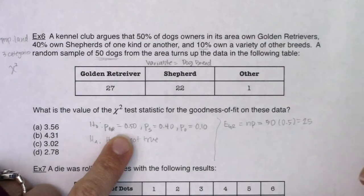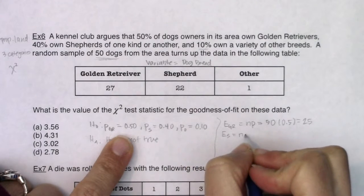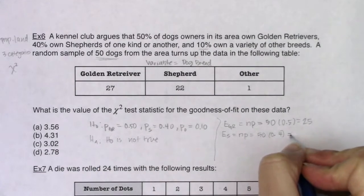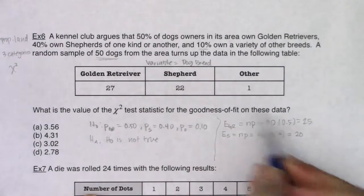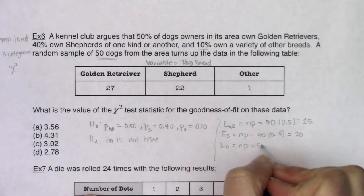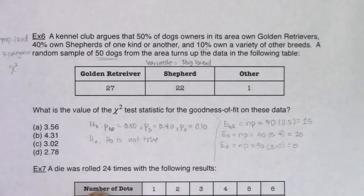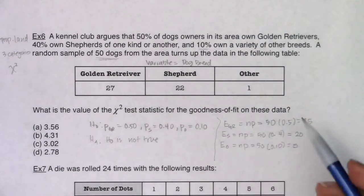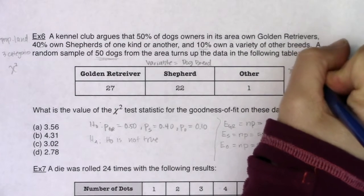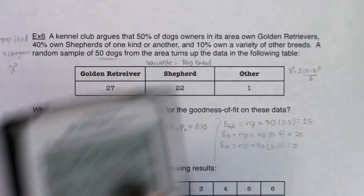I expected 25 golden retrievers and observed 27 — pretty close. For shepherds, expected = NP = 50 times 40% = 20, and I observed 22 — not too different. For others, expected = NP = 50 times 10% = 5. All expected counts are greater than or equal to five, so I can run this chi-squared test. The test statistic is the sum of observed minus expected squared over expected.